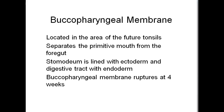The buccopharyngeal membrane is located in the area of the future tonsils. It separates the primitive mouth from the foregut. The stomodeum is lined with ectoderm and the digestive tract is lined with endoderm. The buccopharyngeal membrane will rupture at four weeks.